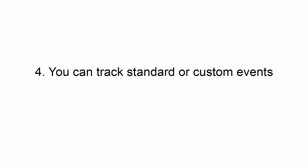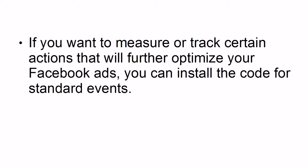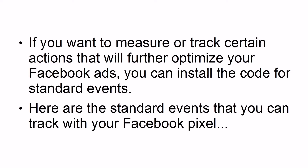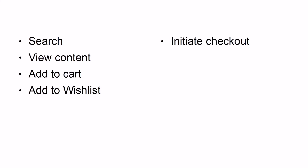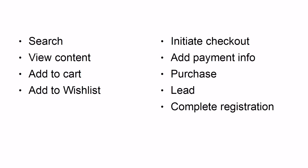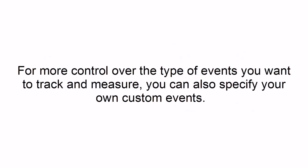Benefit 4: You can track standard or custom events. If you want to measure or track certain actions to further optimize your Facebook ads, you can install the code for standard events. The standard events you can track with your Facebook Pixel include: Search, View Content, Add to Cart, Add to Wish List, Initiate Checkout, Add Payment Info, Purchase, Lead, and Complete Registration. For more control over the type of events you want to track and measure, you can also specify your own custom events.